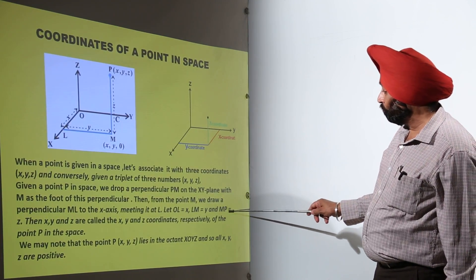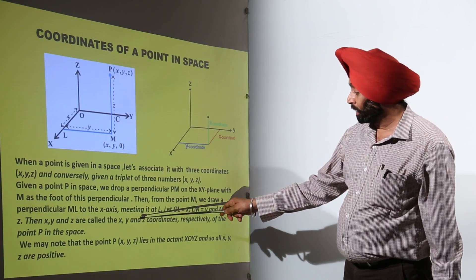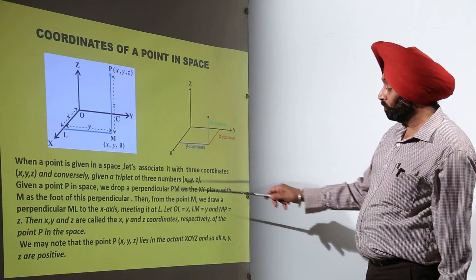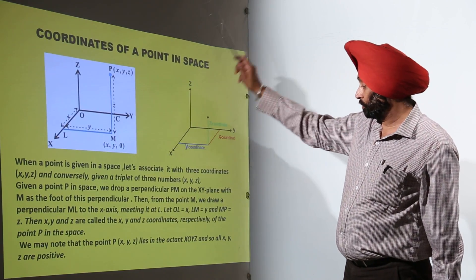Let OL is equal to X, LM is equal to Y, and MP is equal to Z. Then X, Y, Z are called the X, Y, and Z coordinates respectively of the point P in the space.